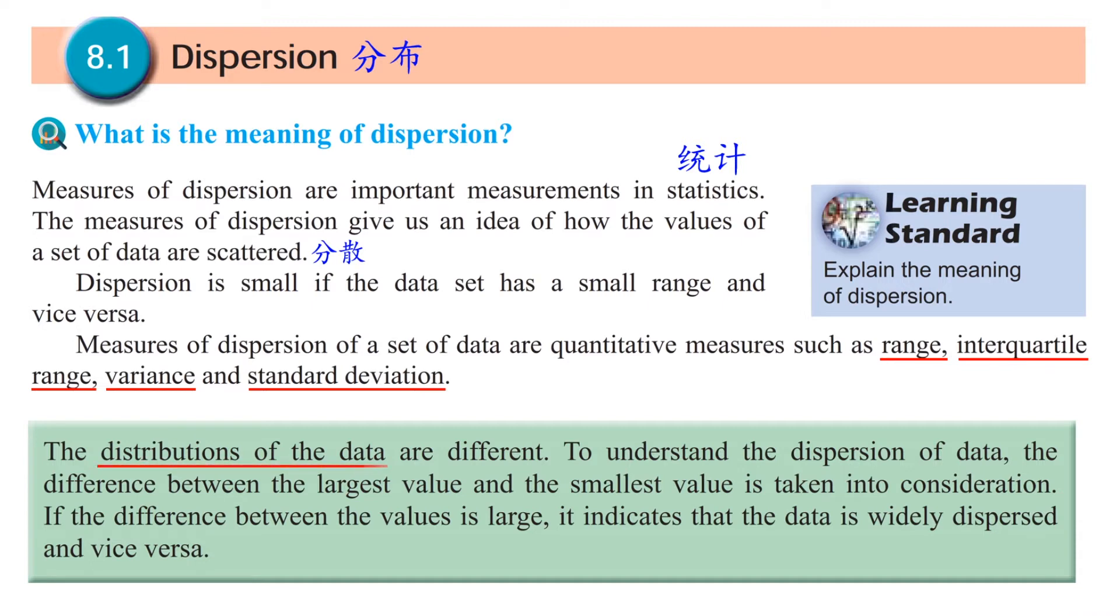The distribution of data, also 数据的分布, are different. To understand the distribution of data, the difference between the largest value and the smallest value is taken into consideration. This difference between the largest value and the smallest value is the range. If the difference between the values is large, it indicates that the data is widely dispersed and vice versa.